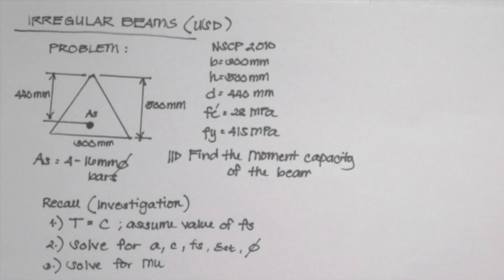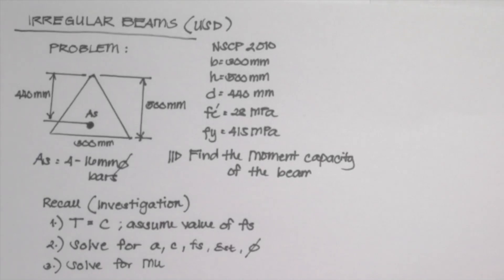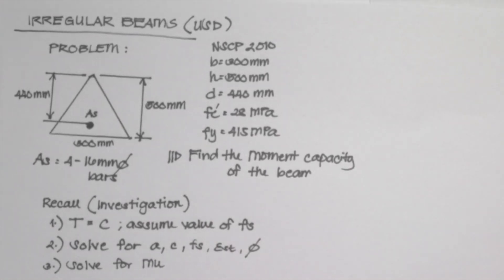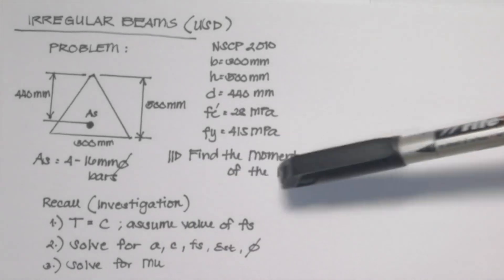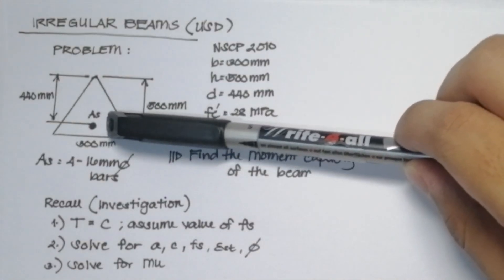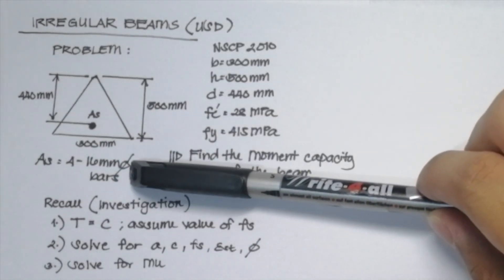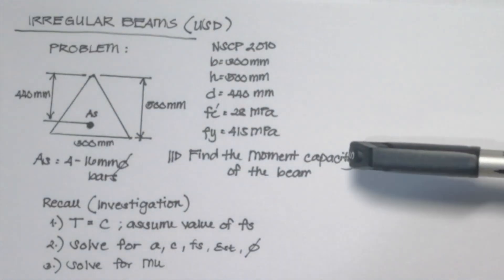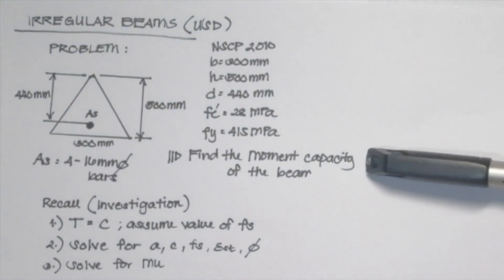We will use NSCP 2010. The base is 300mm, the height of the triangle is 500mm, and the effective depth is 440mm. The compressive strength fc' is 28MPa and the yield strength of the reinforcement fy is 415MPa. Our As is composed of 4 16mm diameter bars.